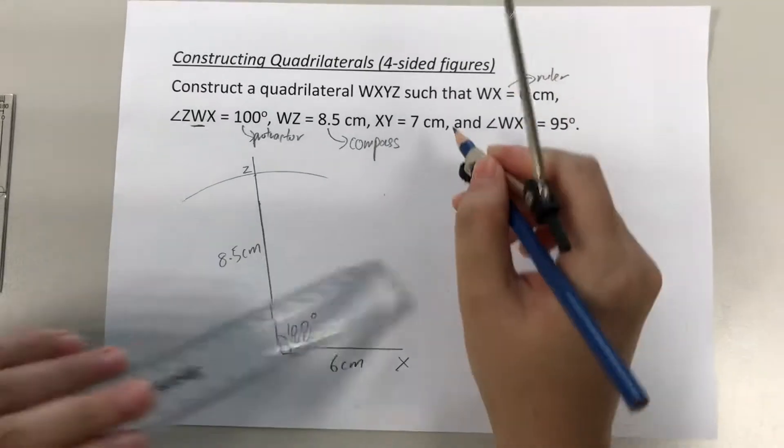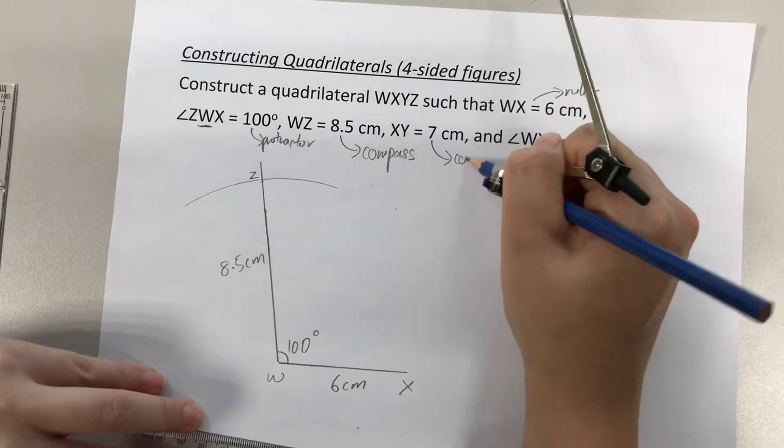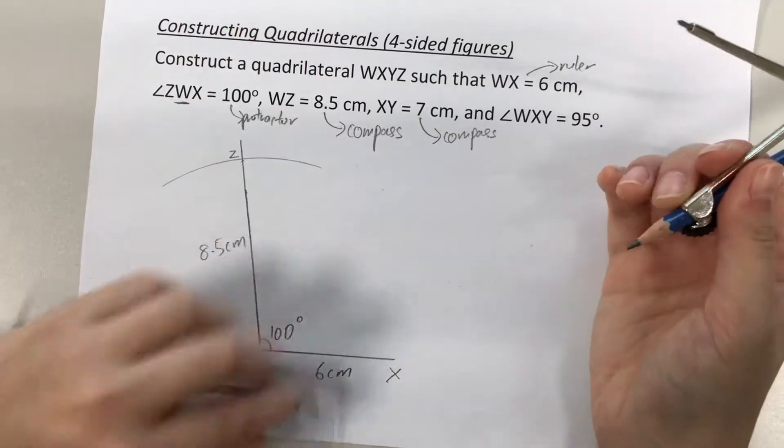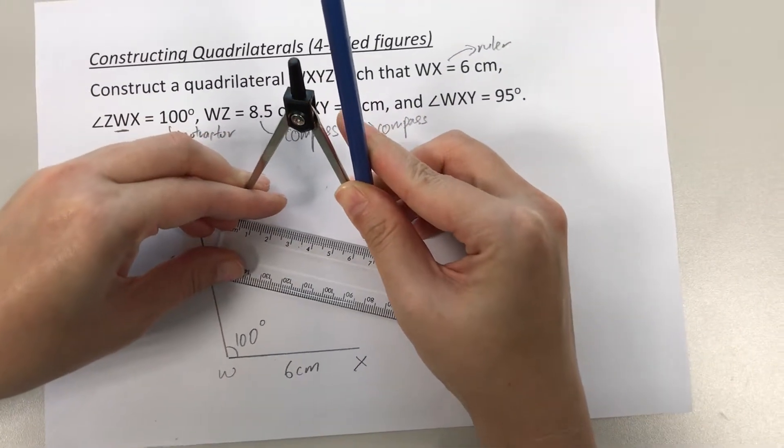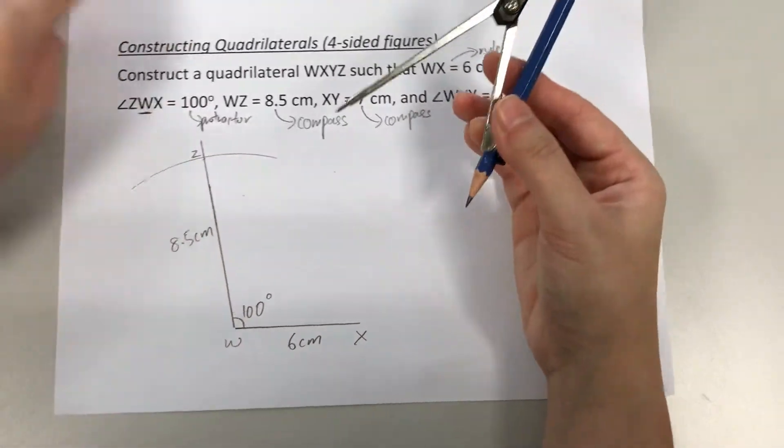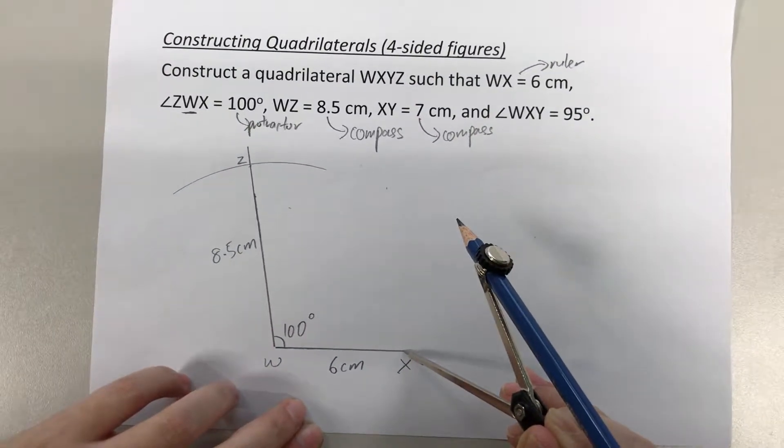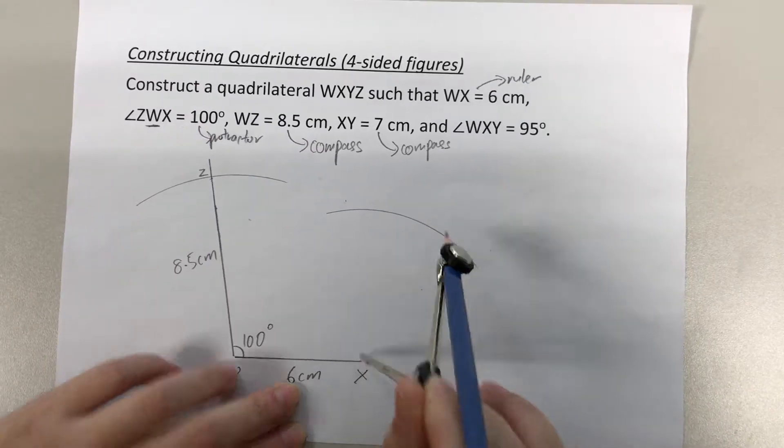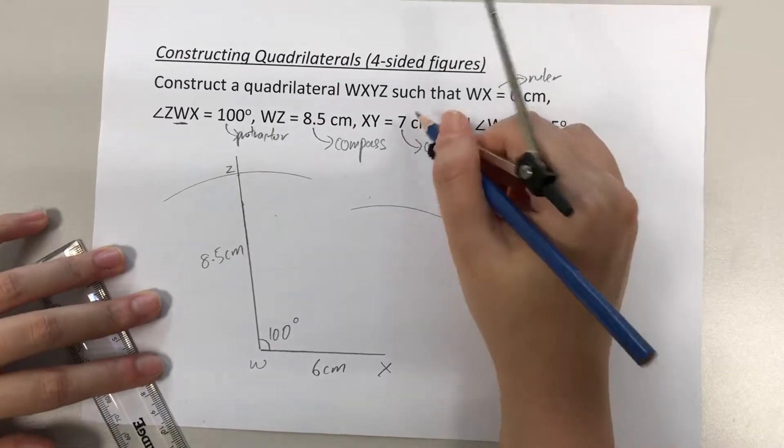Okay, next information that we have: XY, 7 cm. So again, this is a length. I have to use a compass to draw my 7 cm for XY. Alright, so I'm going to open my compass to 7 cm. Alright, 7 cm for XY. So decide where to place my needle. This is for XY, so I'm going to place the needle at X. Alright, and I'm going to draw a curve. Please make sure you remember not to erase all these curves that you have drawn. It will count towards the working for drawing your quadrilateral. Alright, so this is done.